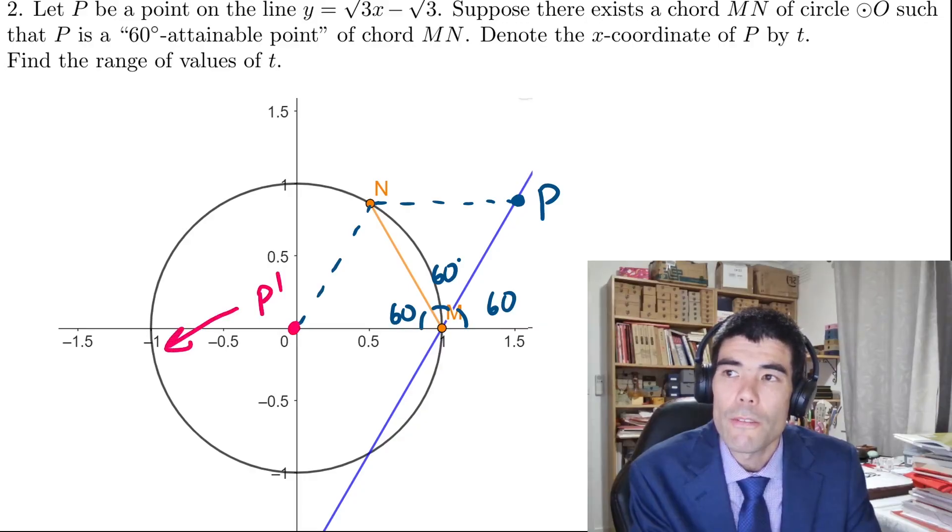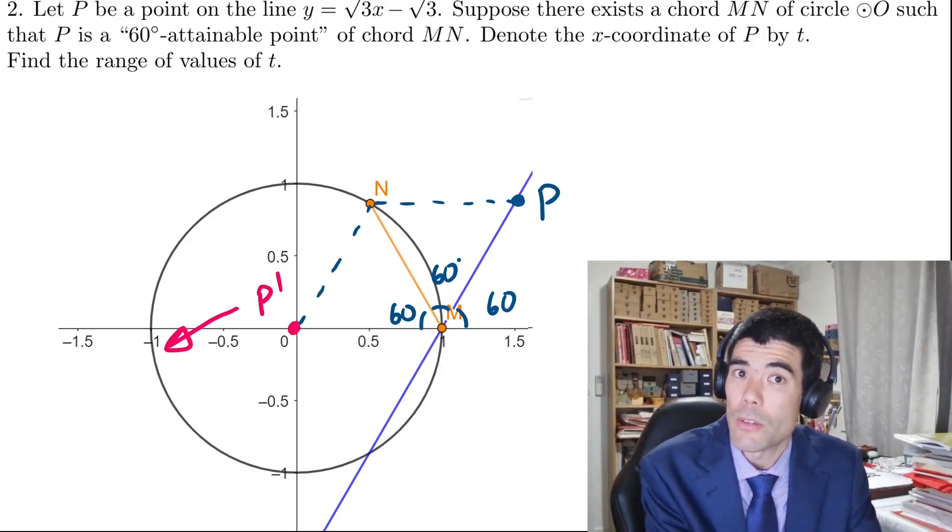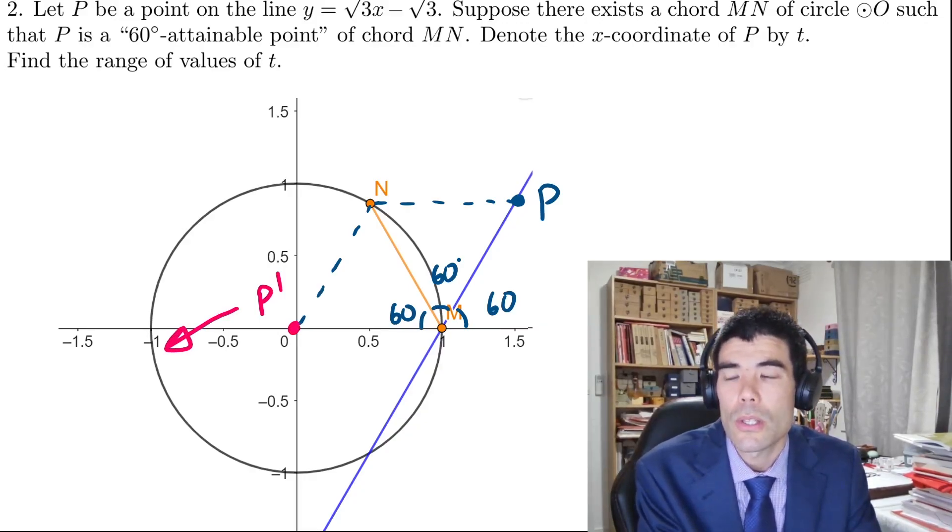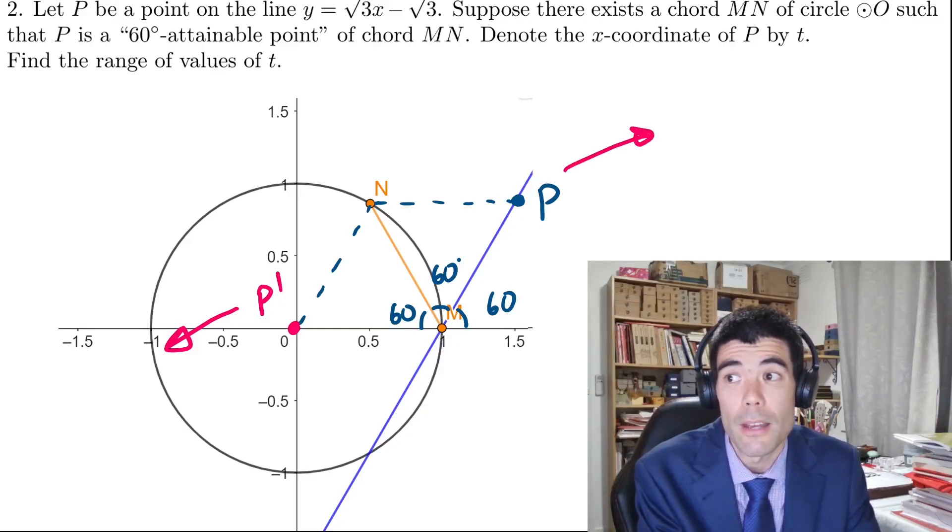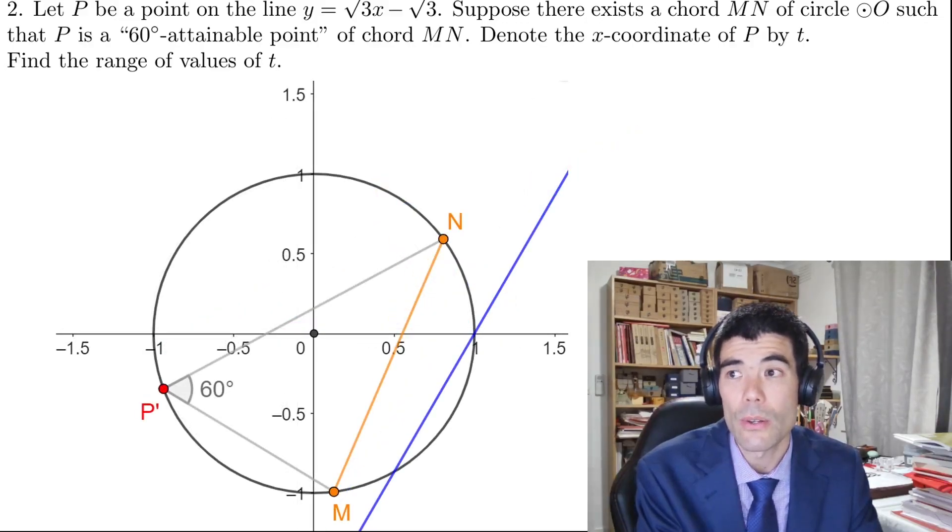But we want to push P further to the right with a larger x coordinate. So we can do that by pushing P' further to the left. So if we push P' to the edge of the circle,